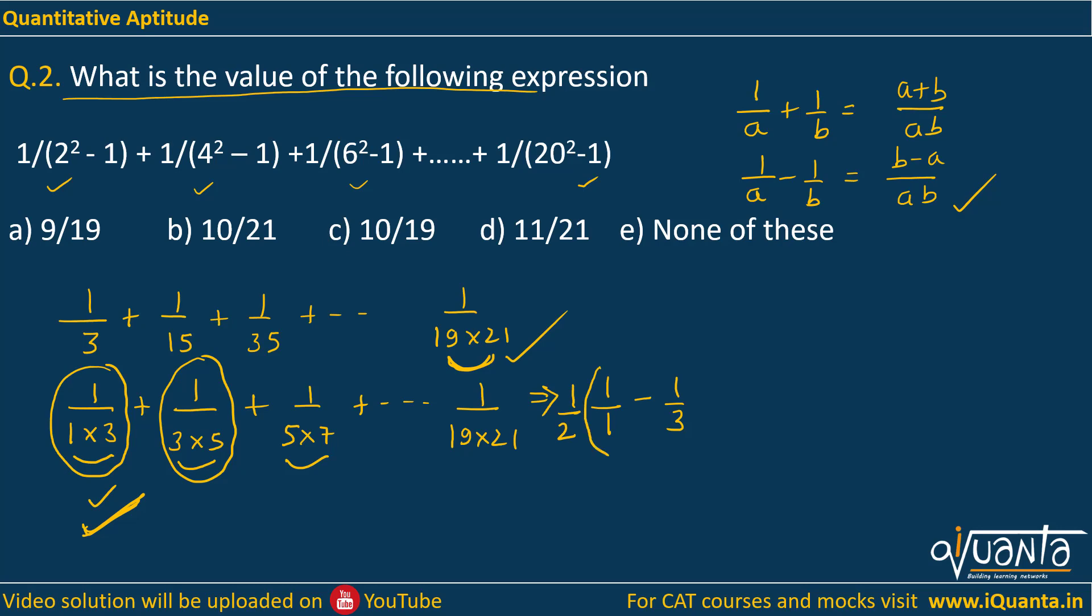Then if I talk about the next term, 1/(3×5), again I can write it as 1/3 - 1/5. But in the numerator we will be getting 2, but we only had 1/(3×5) over here. So to cancel that 2 in the numerator, I will again multiply it by 1/2. So similarly, I can say that with every term I will have to multiply 1/2, and these terms in the denominator can be written separately by inserting a minus sign between them. So the last term would be 1/19 - 1/21, again it will be multiplied by 1/2 over here.